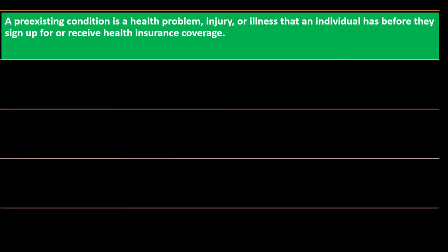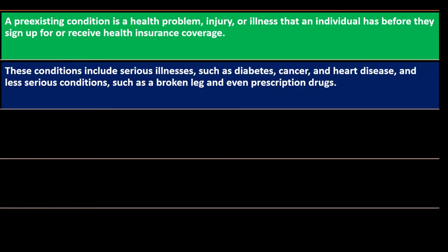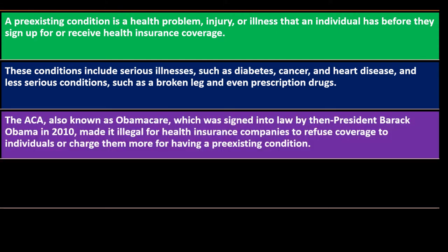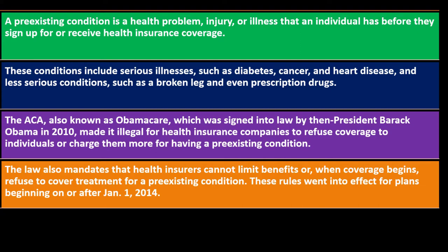Understanding pre-existing conditions: a pre-existing condition is a health problem, injury, or illness that an individual has before they sign up for or receive health insurance coverage. These conditions include serious illnesses such as diabetes, cancer, and heart disease, and less serious conditions such as a broken leg and even prescription drugs. The ACA — the Affordable Care Act, also known as Obamacare — signed into law by President Barack Obama in 2010, made it illegal for health insurance companies to refuse coverage to individuals or charge them more for having pre-existing conditions. That obviously sounds good, but from an insurance calculation standpoint, it's going to have an impact on the risk pool and all the statistical calculations used to figure out what premiums would be.